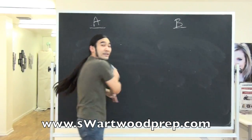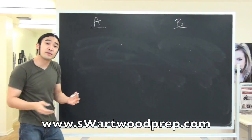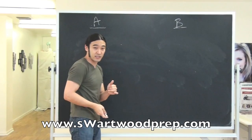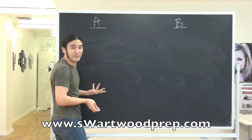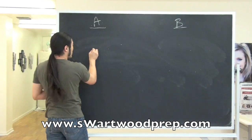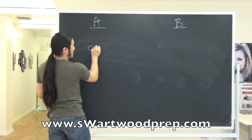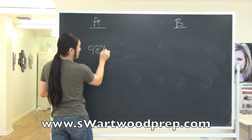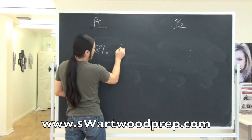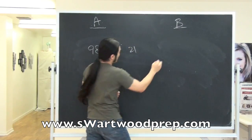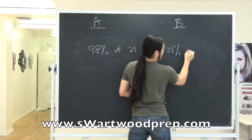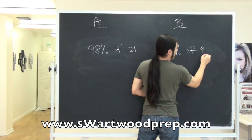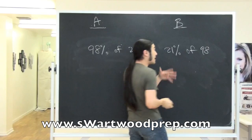So let's look at that same problem, but now let's do it a different way with different numbers. Maybe now we'll say 98% of 21, or 21% of 98.